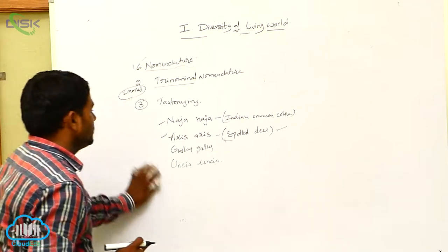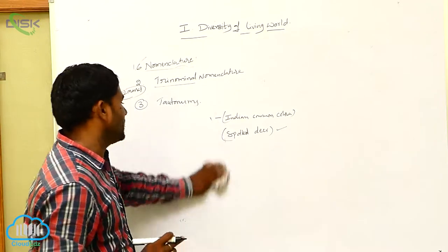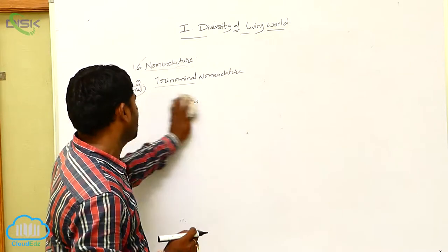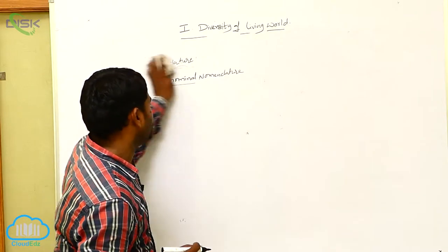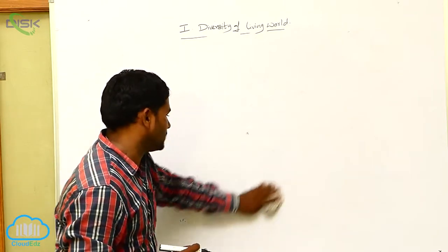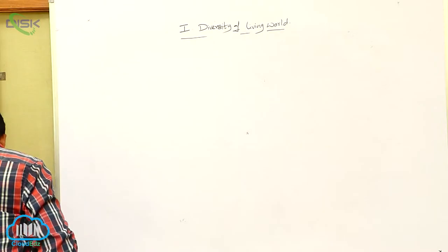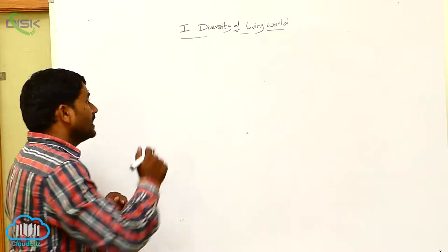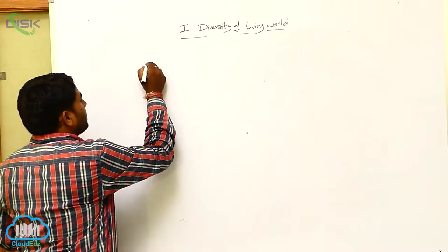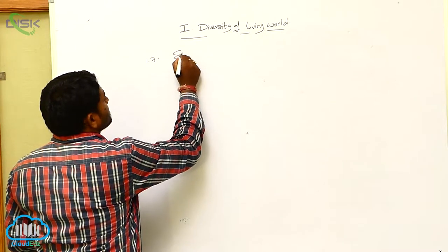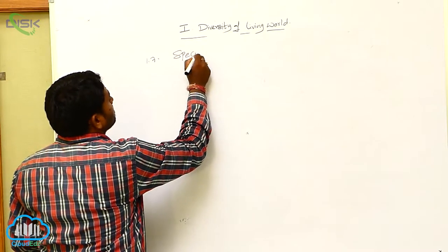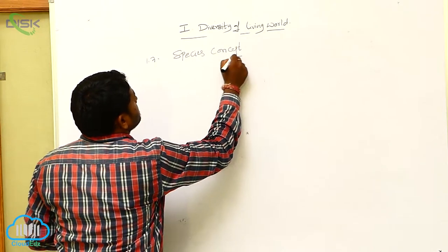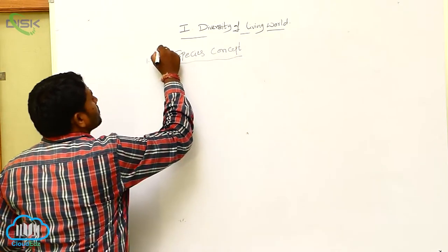In tautonymy, the genus and species names are the same two words. This concludes the discussion on the nomenclature process. Next, let us see the species concept.